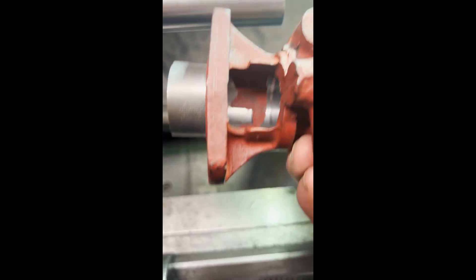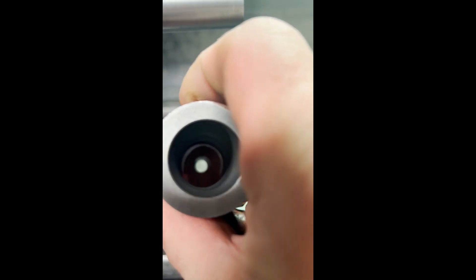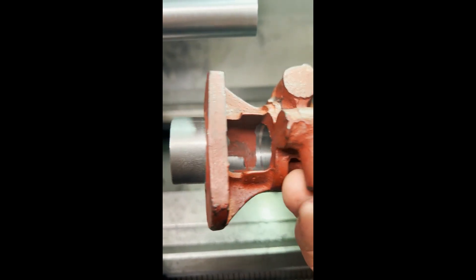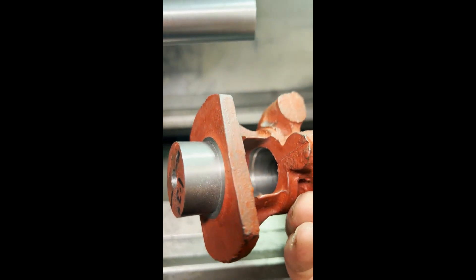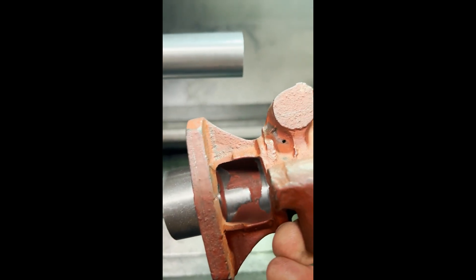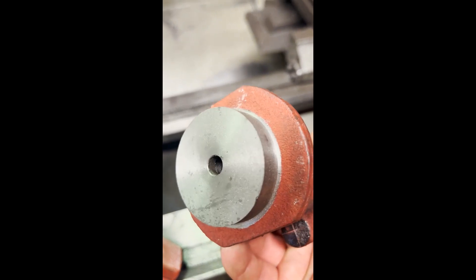Then I was able to hold that in the three jaw chuck to bore the hole out inside. Then it's quite difficult to hold to do the other end because I've got to turn this down and machine that, so I'm going to put it onto this mandrel. This one I've already put on the mandrel and machined, as you can see. I'm just going to share with you how I put it on.